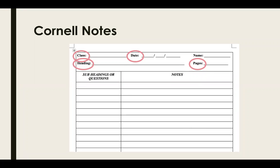This is how Cornell notes look. You can buy Cornell-style notes at the bookstore, or you can make your own by adding some lines in your notebook. If you prefer to take notes with your laptop, you can also create this style on screen using your favorite applications. The top of the page is filled out correctly with the class, date, unit title or headings, and page numbers.